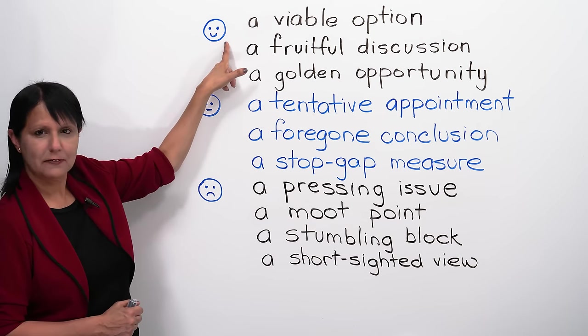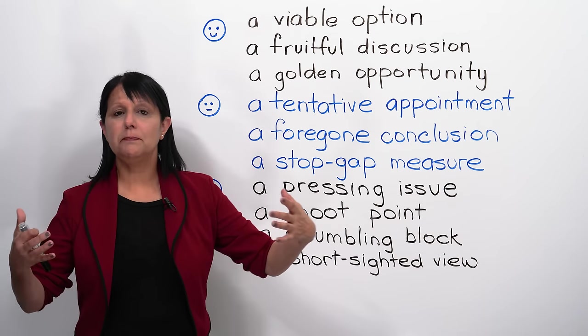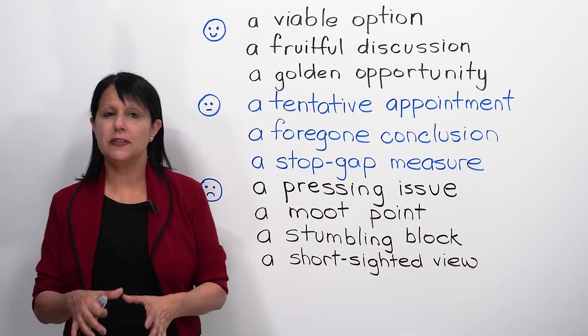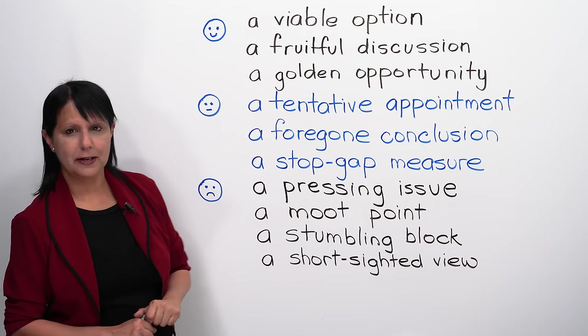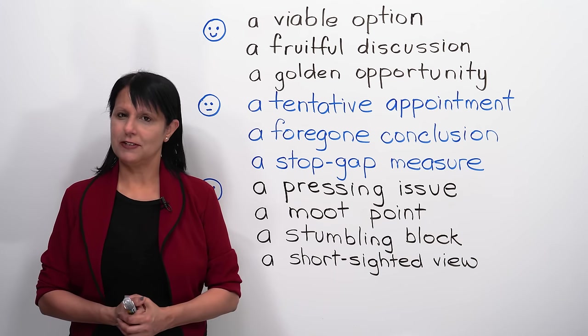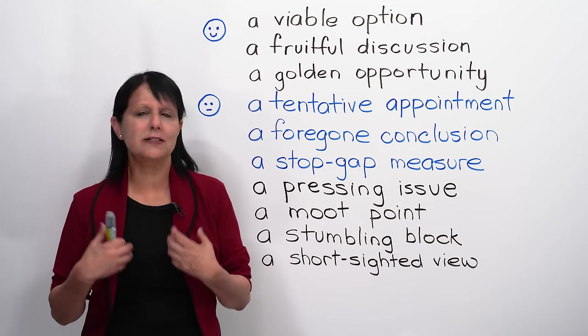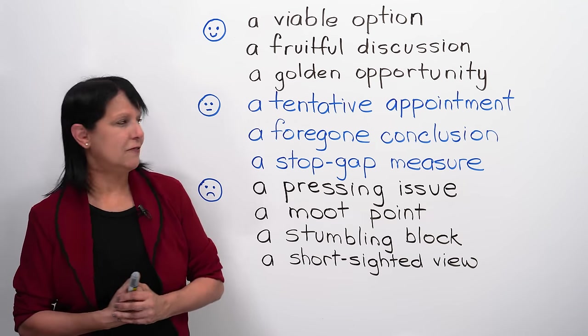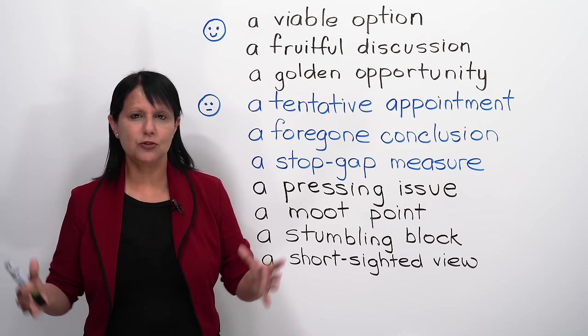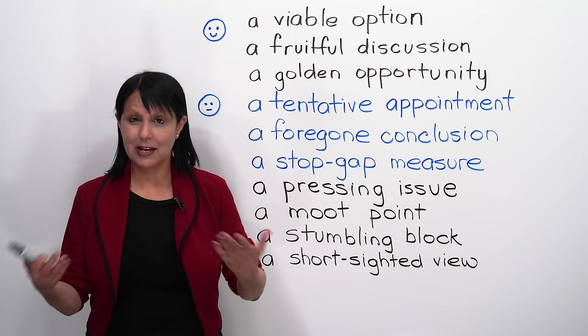Now, you will see that here I have a smiley face. So, why is that? Because the first three expressions are all kind of on the positive side. The next three are neutral, and the last four are a little bit on the negative side. So, let's get back. The next one, a golden opportunity. An opportunity by itself is a positive thing, but if something is a golden opportunity, what does that mean? It's an amazing opportunity, it's a wonderful opportunity, it's a great opportunity. For example, let's suppose there's a bright student, and then he or she gets a scholarship, a fully paid scholarship to go and study at a very well-known university. That's a golden opportunity. To improve his life or her life.